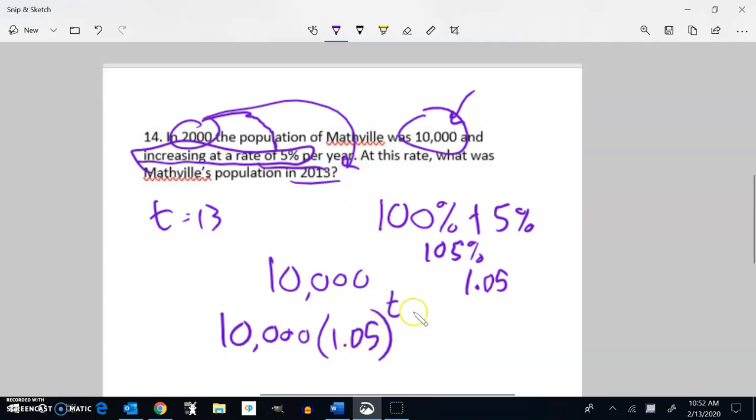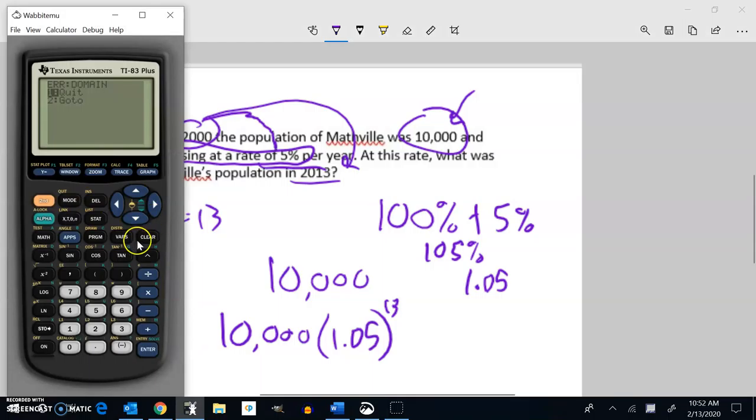Because it's going to do it this many times, multiplied by 1.05 that many times. And that change from 2000 to 2013 is 13 years. So that would be 13th power. So let's do that on my calculator. So 10,000 times 1.05 to the power of 13.